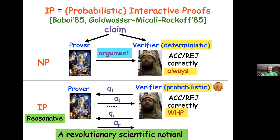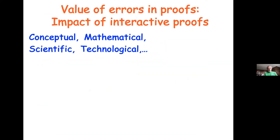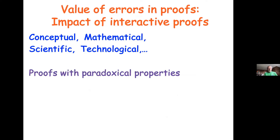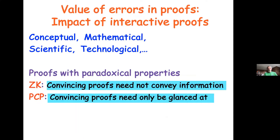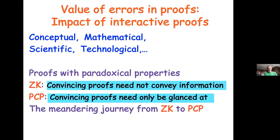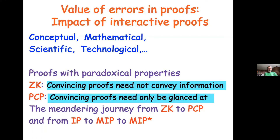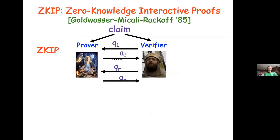I want to focus on two proof systems with paradoxical properties: zero-knowledge proof systems and PCPs — probabilistically checkable proofs. I want to talk about the methodology and in particular how these two very different notions evolved, and how it led to the quantum proof systems. That's the plan for the next 15 minutes, and then we'll finish with the quantum ones.